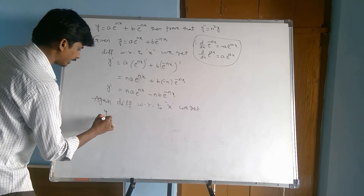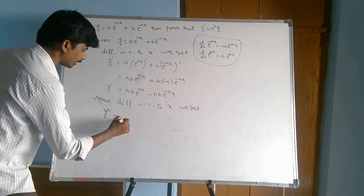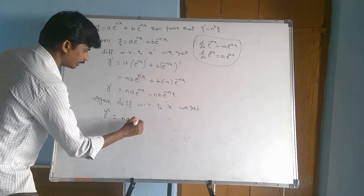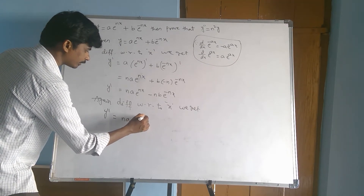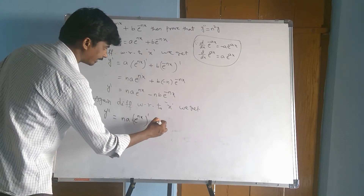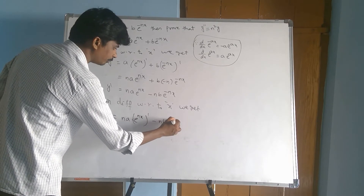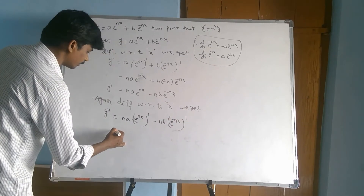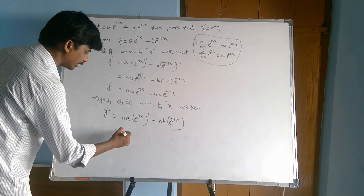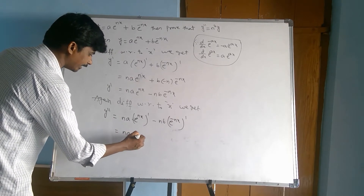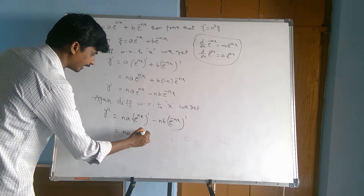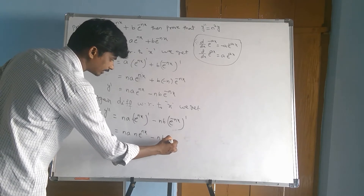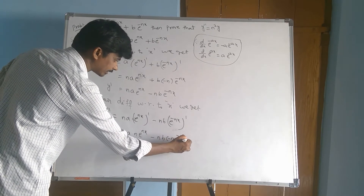Again differentiating with respect to x we get y double dash equal n into a constant here e power nx dash minus nb into e power minus nx dash. That equals n into a into n into e power nx minus n into b minus n into e power minus nx.